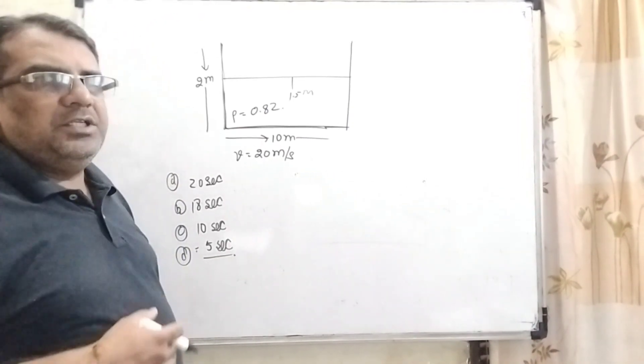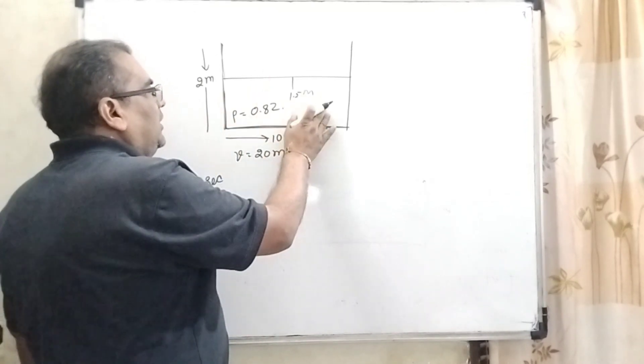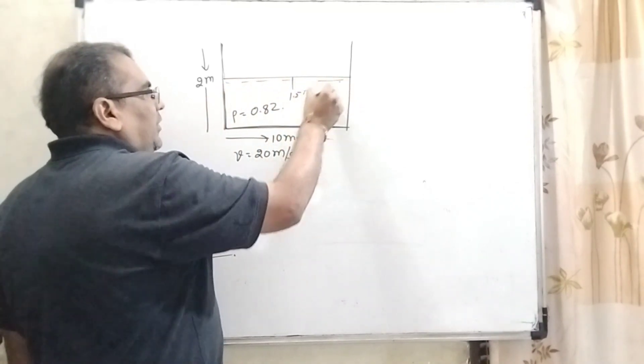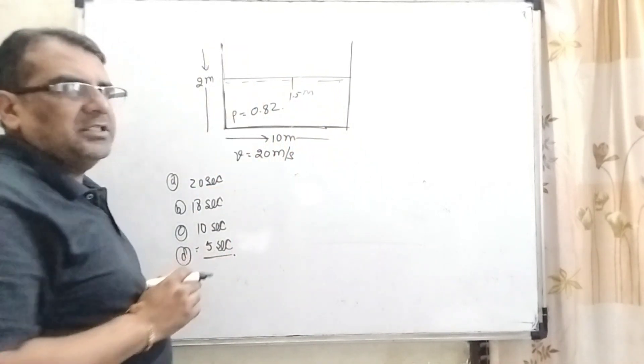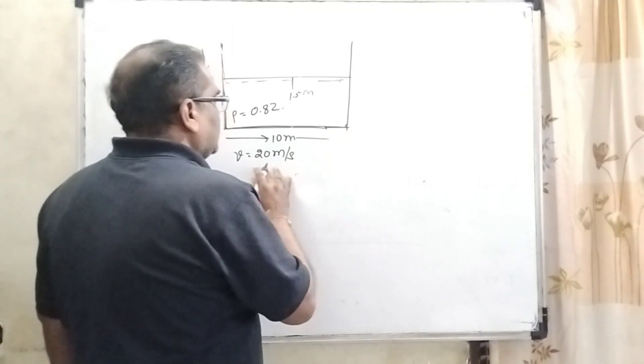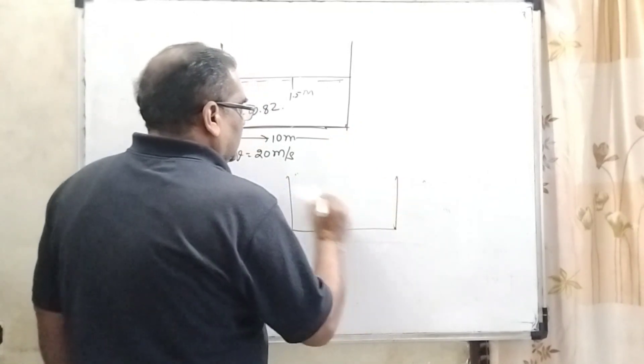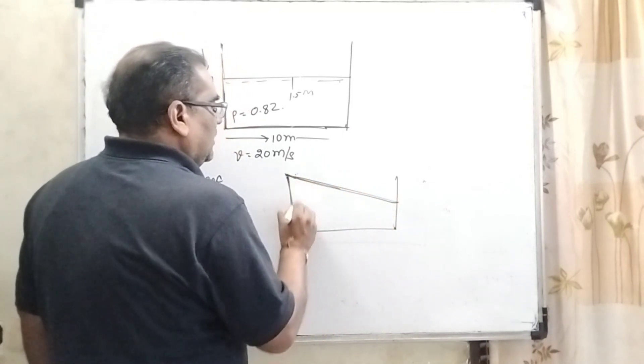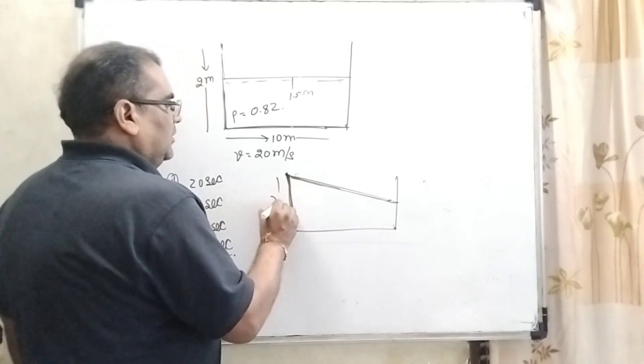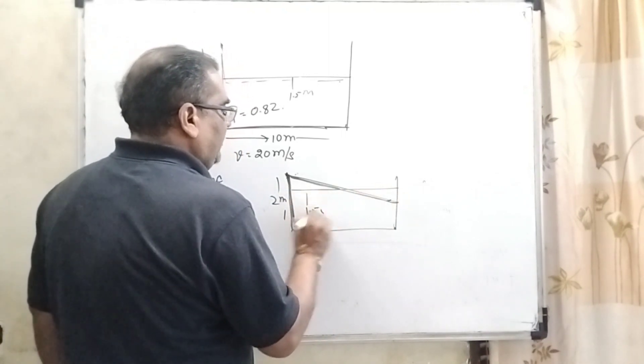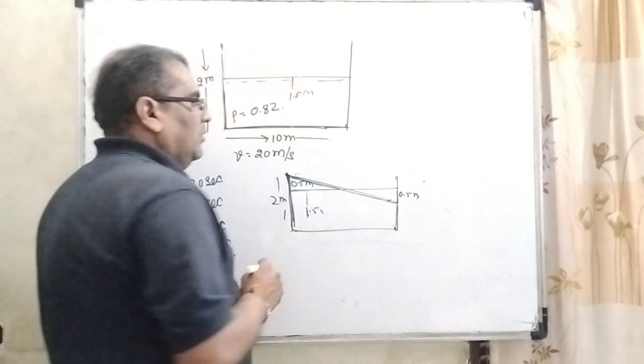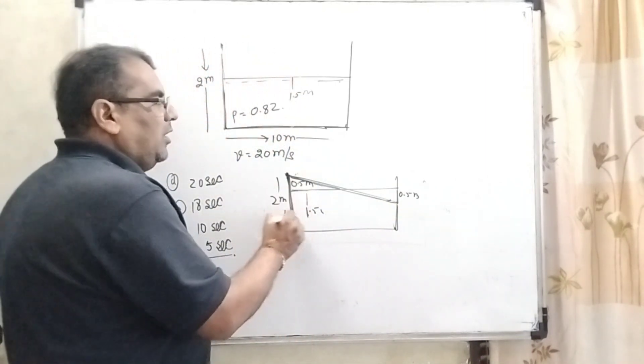Dear students, here what is the question. Here we have given a container filled with oil and specific gravity or density given that is 0.82. And the oil filled up to 1.5 meter. And total height of this container is given 2 meter and total length is 10 meter. When it is moved to the right side at the speed of 20 meter per second, then the oil here becomes like this, means its height reaches up to the end of this vessel. Initially its height is 1.5, it means 0.5 meter rising up. It means clearly 0.5 meter falls down.